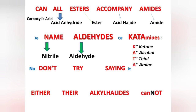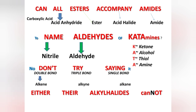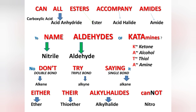For the next phase: 'don't' corresponds to a compound with a double bond, 'try' to a compound with a triple bond, and 'saying' to a single bond compound. A double bond compound is an alkene, a triple bond compound is an alkyne, and a single bond compound is an alkane. For the final phase: 'ether' corresponds to ether, 'he' to thioether, 'alkyl halites' to alkyl halide, and the highlighted 'N' corresponds to nitro.